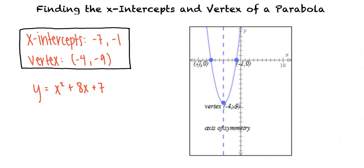Okay, so to find the x-intercepts of a parabola, we set y equal to 0 and solve for x. This process often involves factoring.